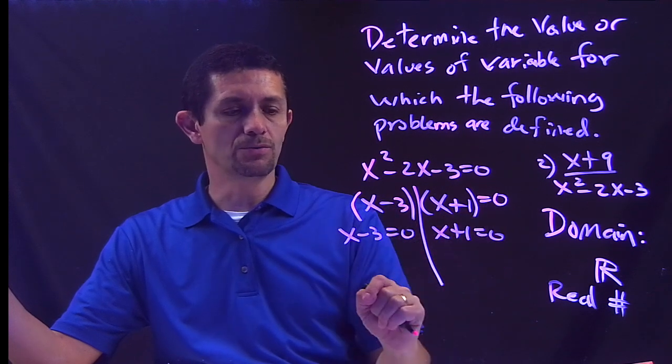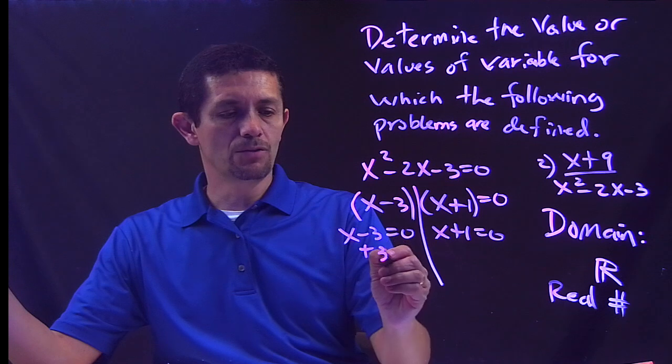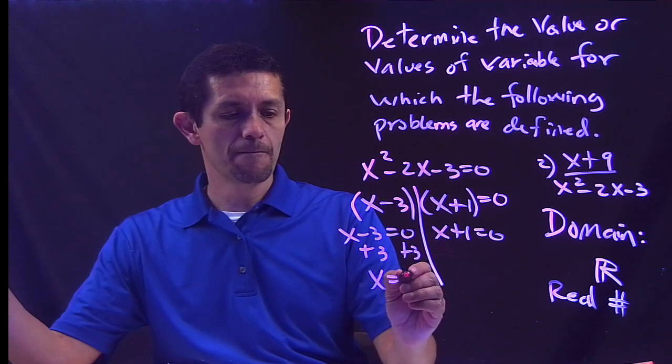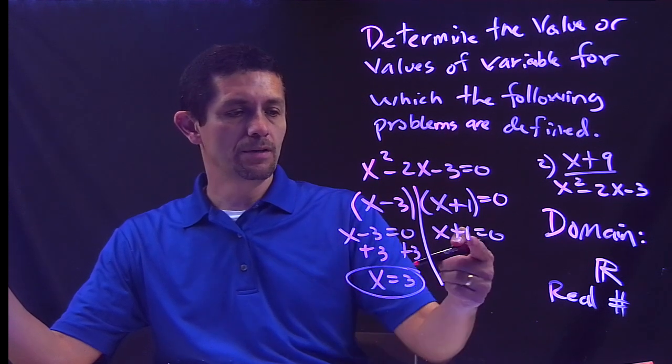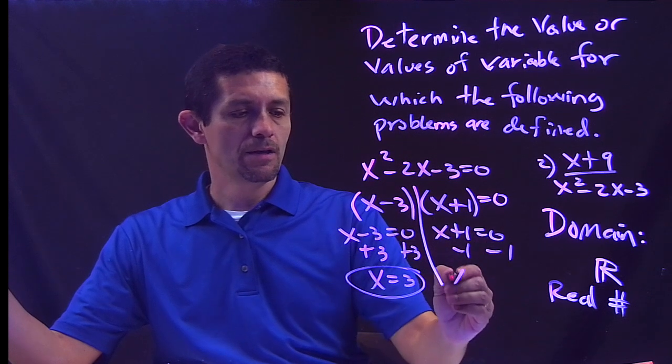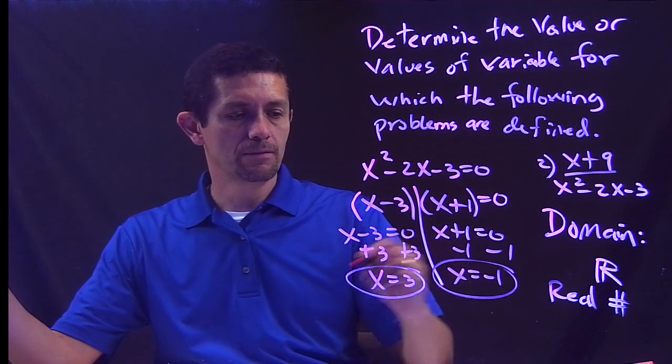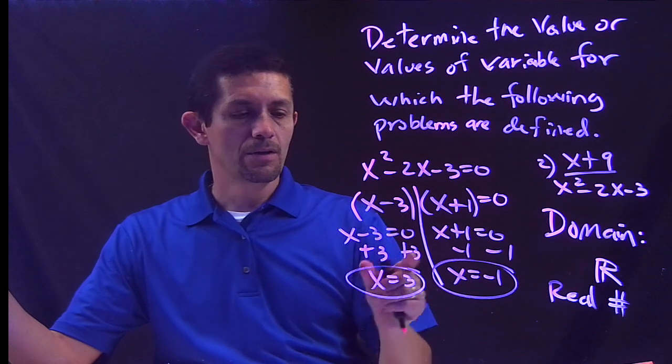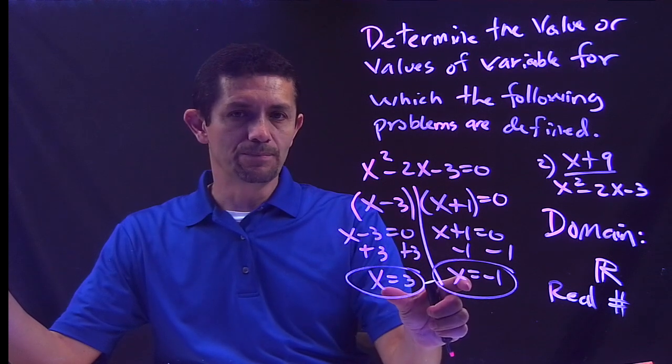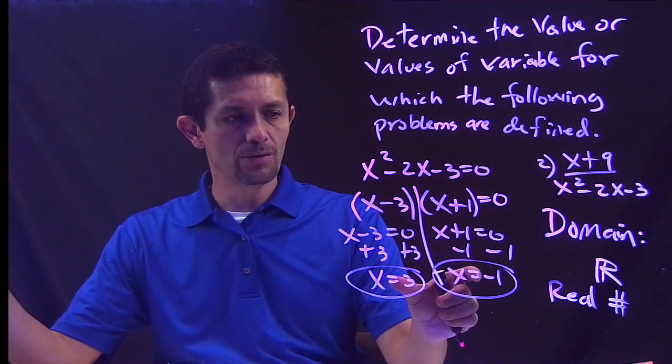I make each parenthesis, each factor equal to 0. From there I need to find the value of x, which is 3 here, and x equals negative 1.